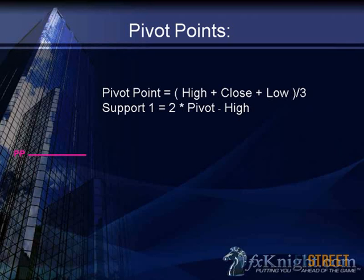So we have above and below the pivot point what we call support one and resistance one. Support one is beneath the pivot point; above it, resistance one — R1 and S1.